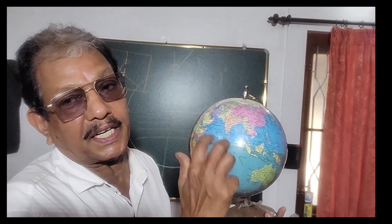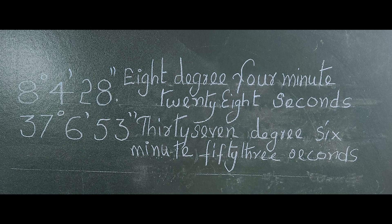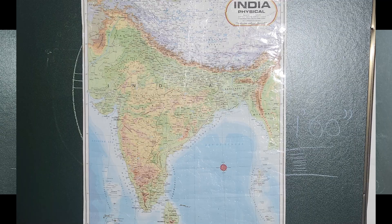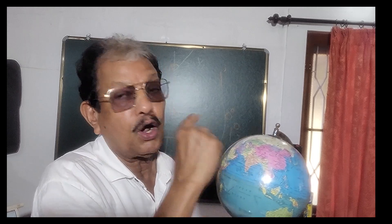That is the exact location of India. If we are saying only degrees, 100% accuracy will not take place. If we are adding minutes also, there will be lesser inaccuracy. If we are saying seconds also, 100% accuracy is there. So the north portion is 37 degrees, 6 minutes, 53 seconds. That is the exact latitudinal location of India. We have understood what is the purpose of latitude.